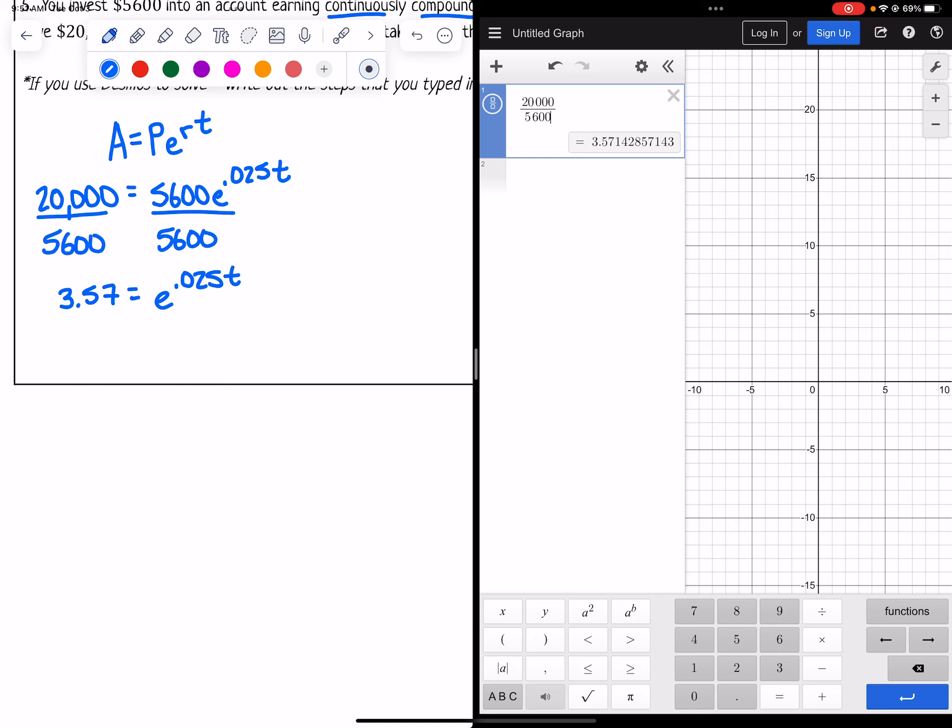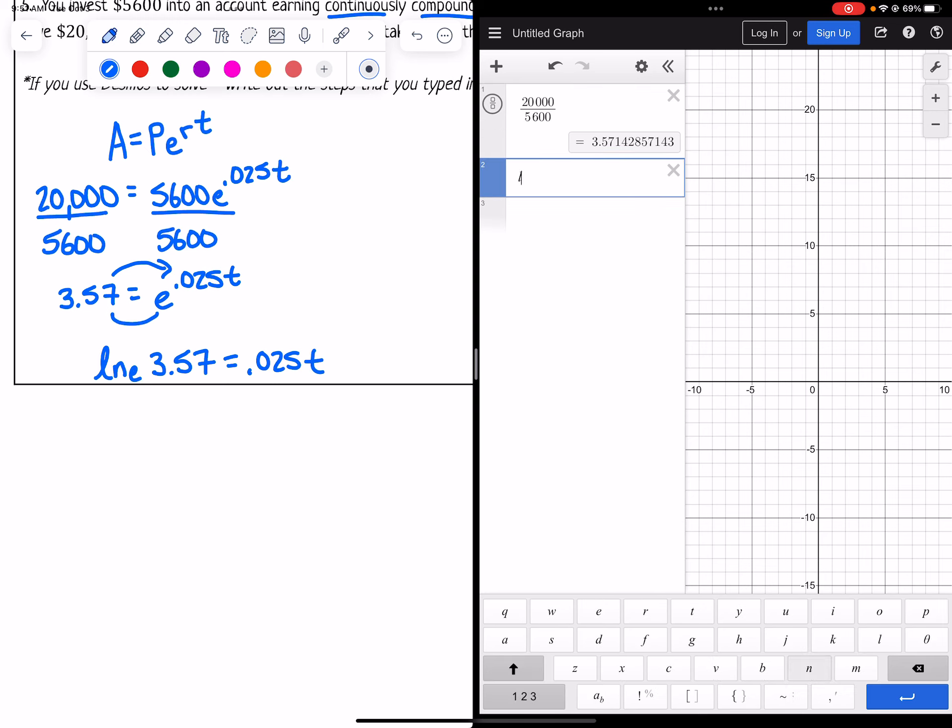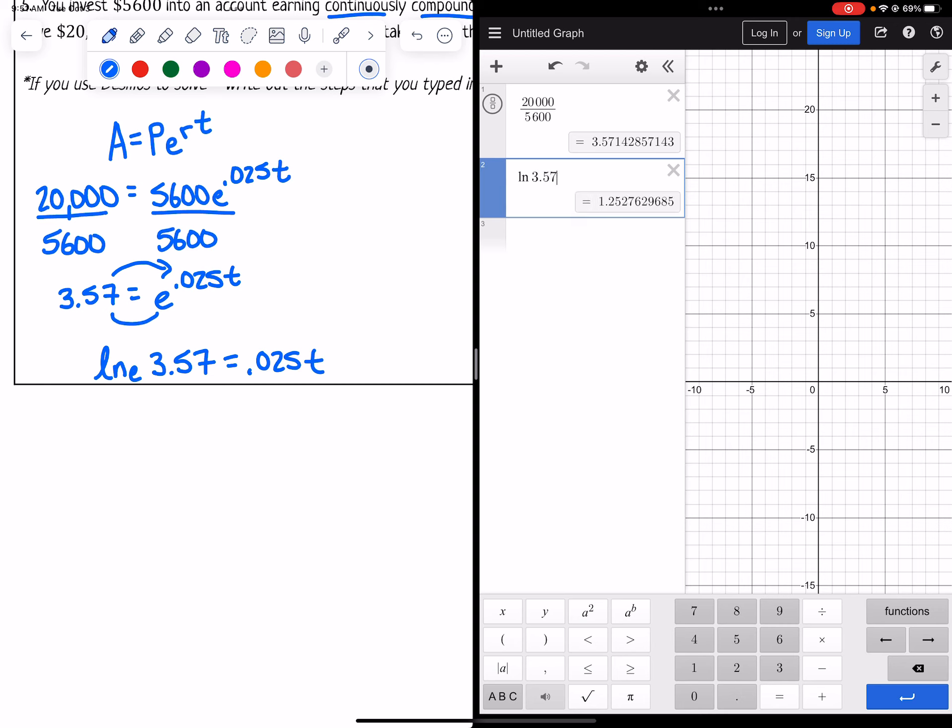Now with e, that would be rewritten in natural log form because natural log is the type of log that has a base of e. So I've got to say ln(3.57) = 0.025t. Then in my calculator, I can type in natural log of 3.57 and get a value for that, which is 1.27 approximately.